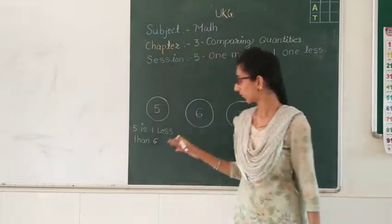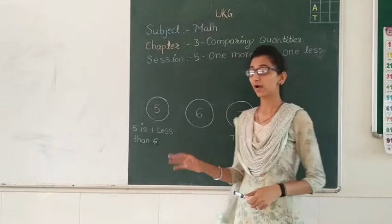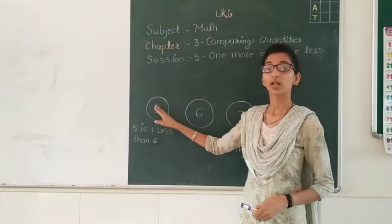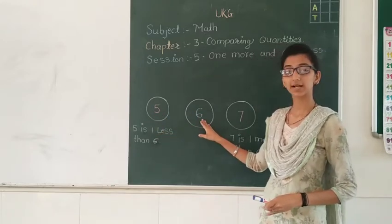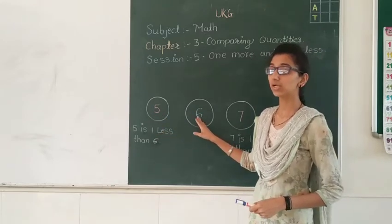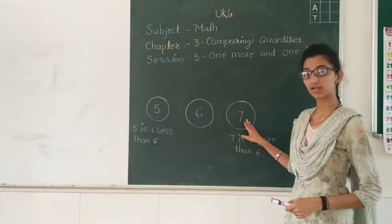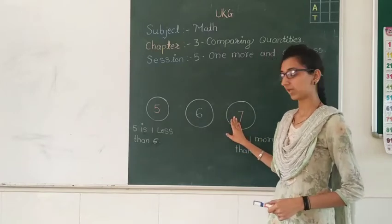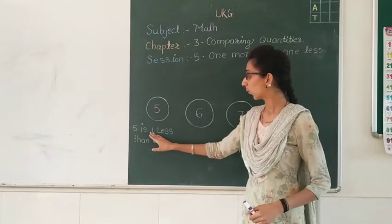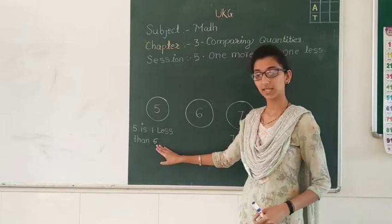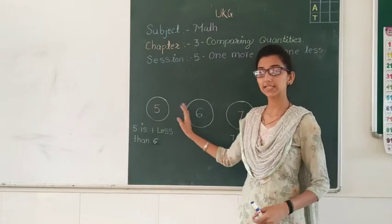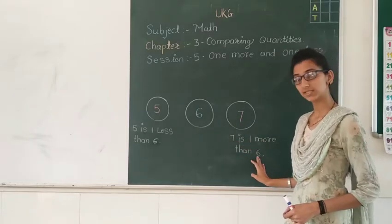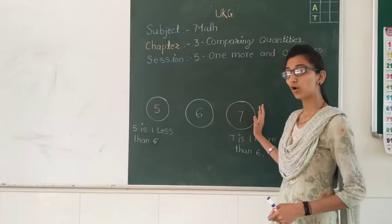So students, first of all you have to look at this board. I have drawn three circles here. In the first circle, I wrote number 5. In the second circle, I wrote number 6. And in the third circle, 7. So look here: 5 is one less than 6, and 7 is one more than 6.